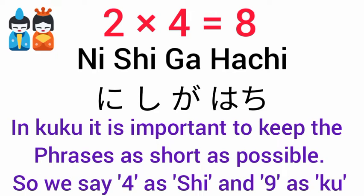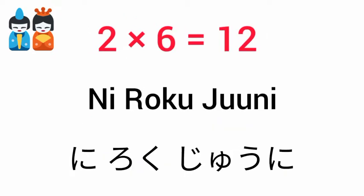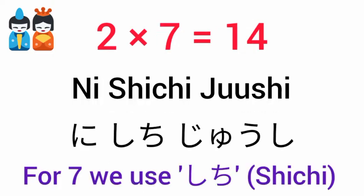In kuku, it is important to keep the phrases as short as possible, so we say 4 is 'shi' and 9 is 'ku'. 2×5 is 10. 2×6 is 12. 2×7 is 14.